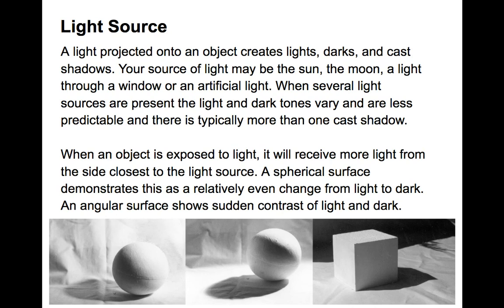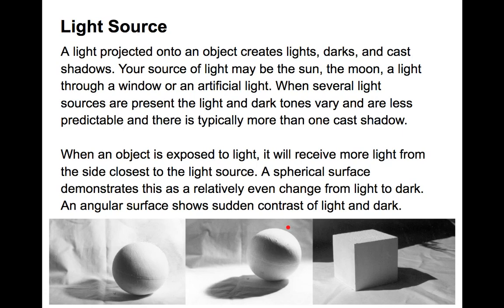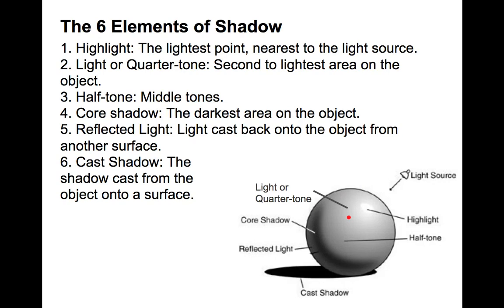When an object is exposed to light, it will receive more light from the side closest to the light source. A spherical surface demonstrates a relatively even change from light to dark, while an angular surface shows sudden contrast of light and dark. In a sphere it gradually goes from light to dark, while on a cube you have a dark side, a medium side, and a light side closest to the light.